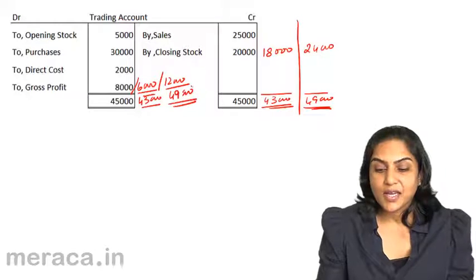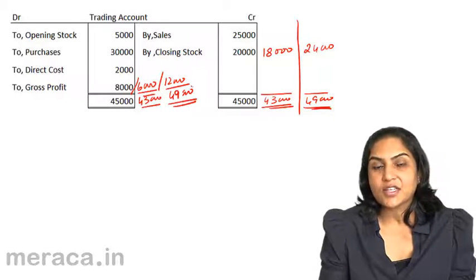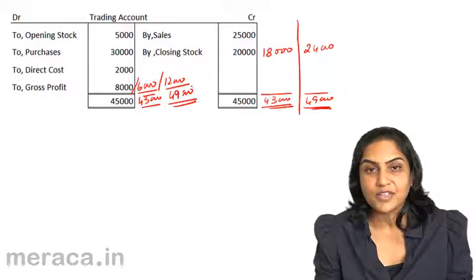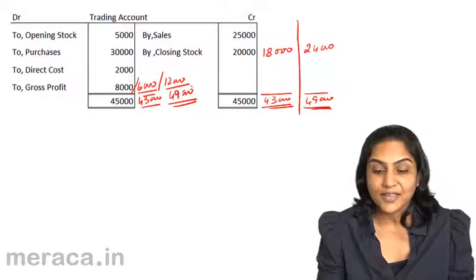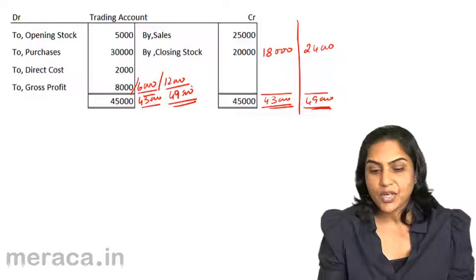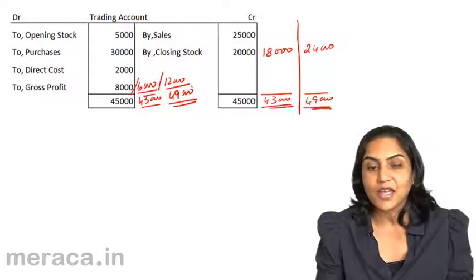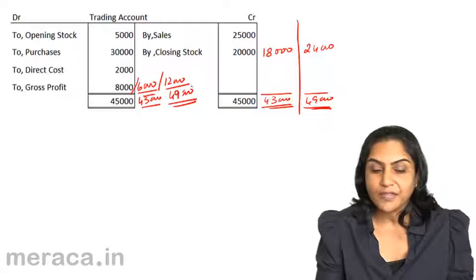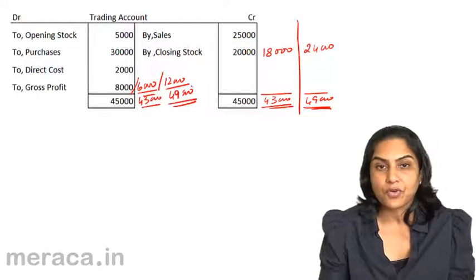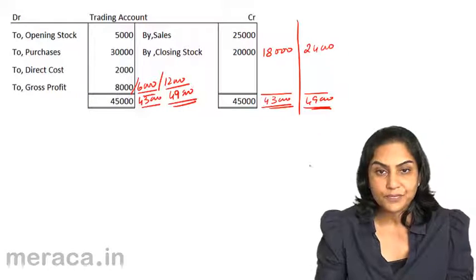Thus, we see that with a decrease in stock, there is a decrease in profit of the same amount. If there is an increase in inventories, there is an increase in profit by the same amount.